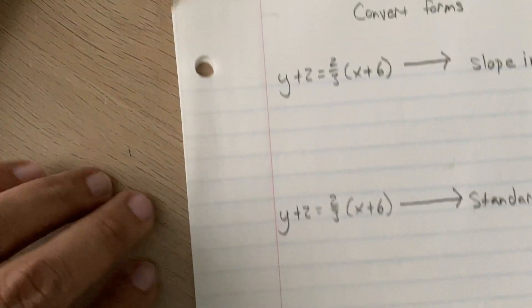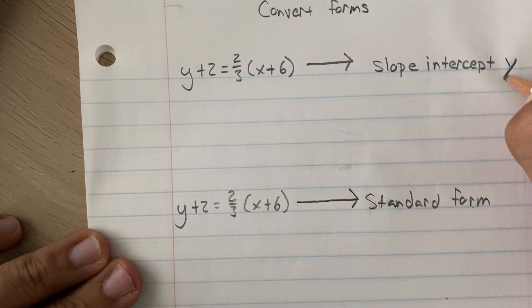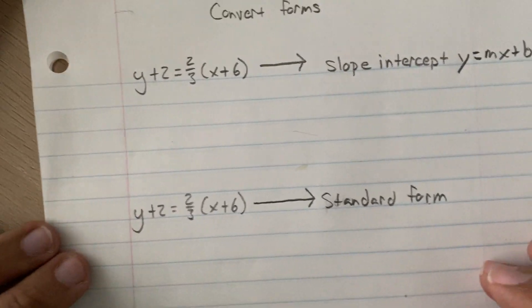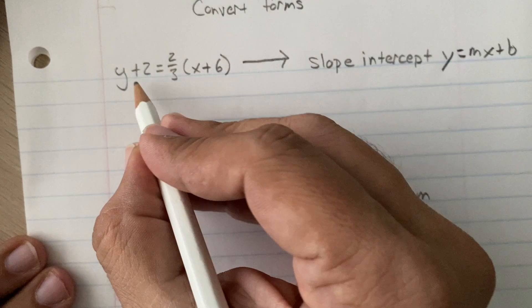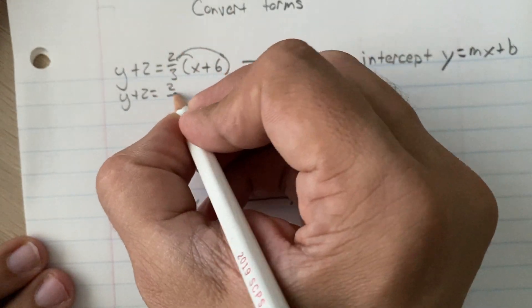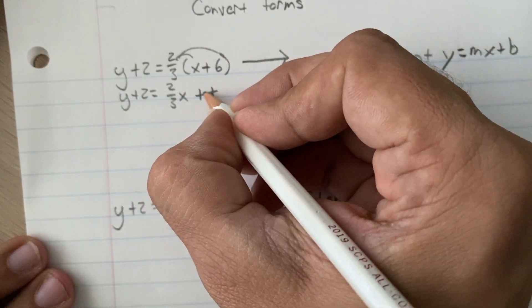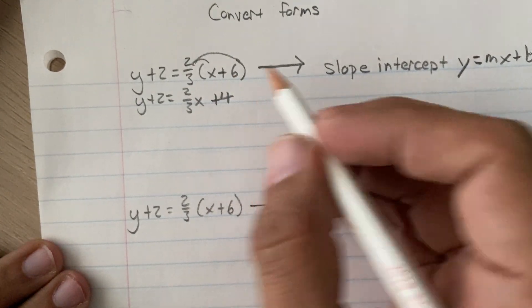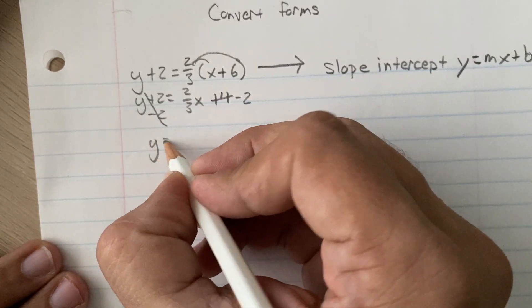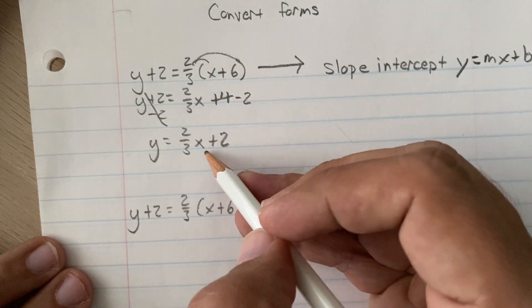Now let's work on our last part: converting forms. We're going to convert this into slope-intercept form, which means y is going to be by itself and there are no parentheses. First we get rid of the parentheses, so we're left with y plus 2 equals 2/3 x, and 2 times 6 is 12, and 12 divided by 3 is 4. Now the parentheses is gone. We subtract 2 on both sides, and we're left with y equals 2/3 x plus 2. I've converted point-slope form into slope-intercept form.